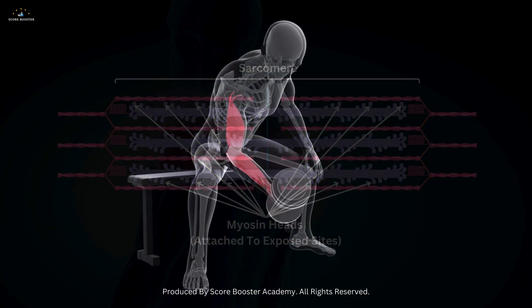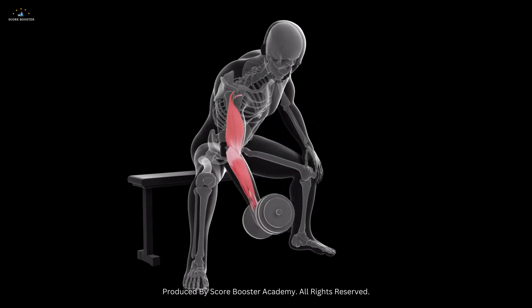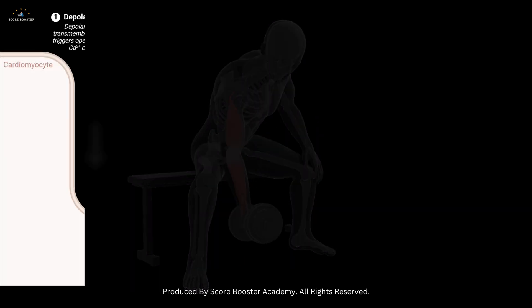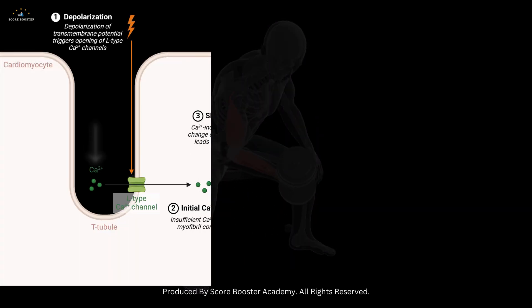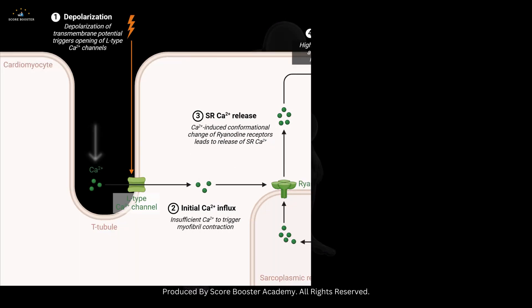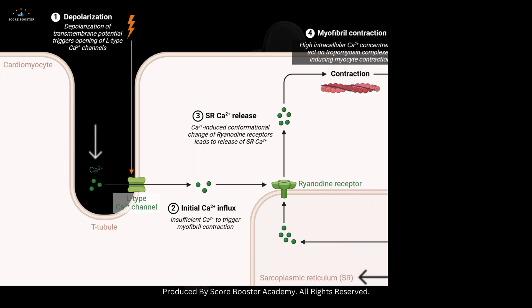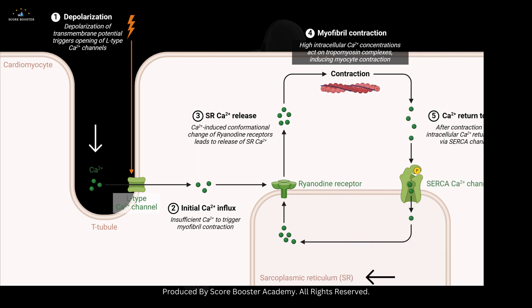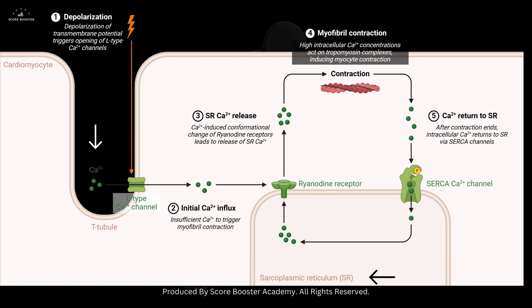To maintain muscle contraction, calcium ions must remain available in the sarcoplasm. The release and uptake of calcium are controlled by the sarcoplasmic reticulum and transverse tubules.